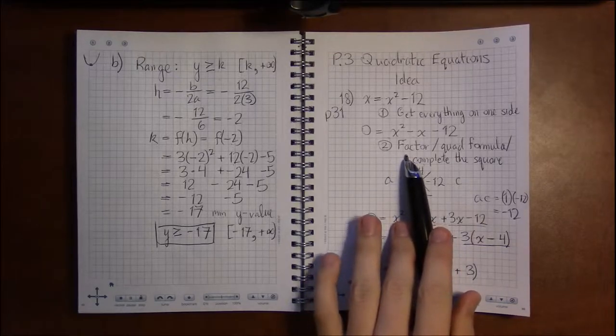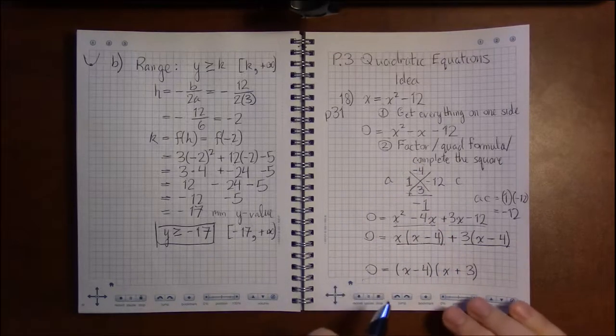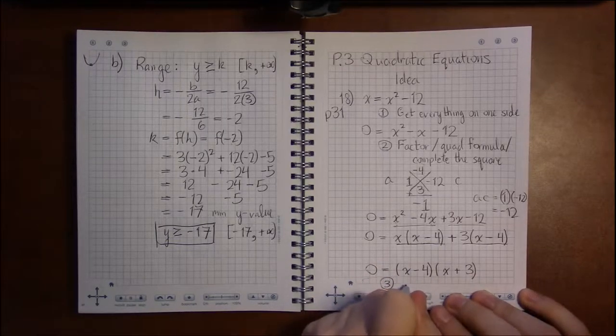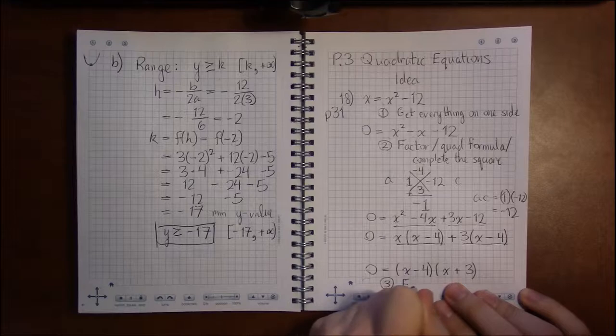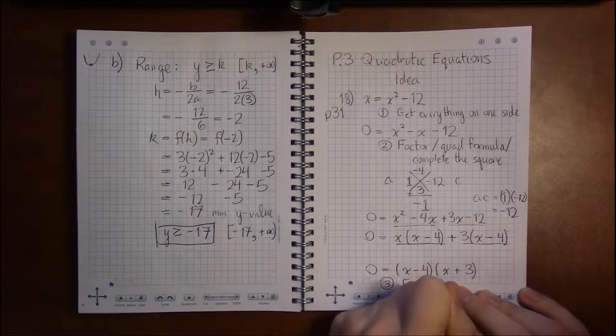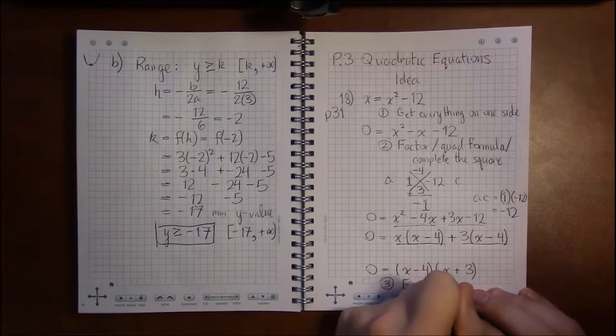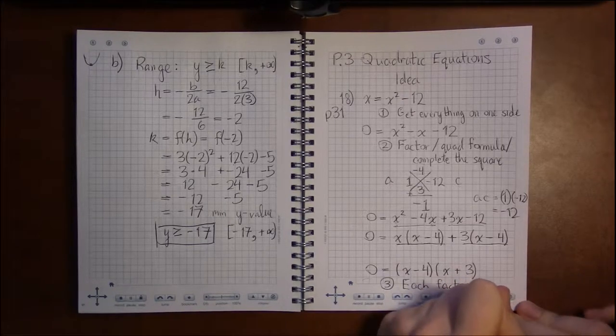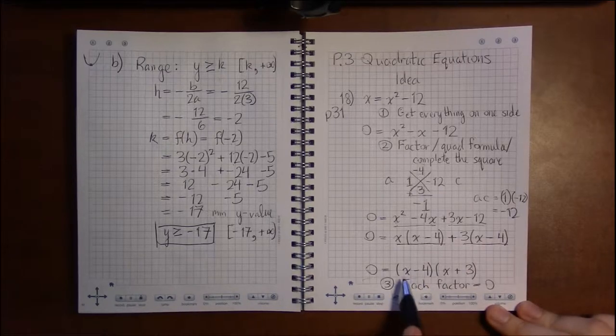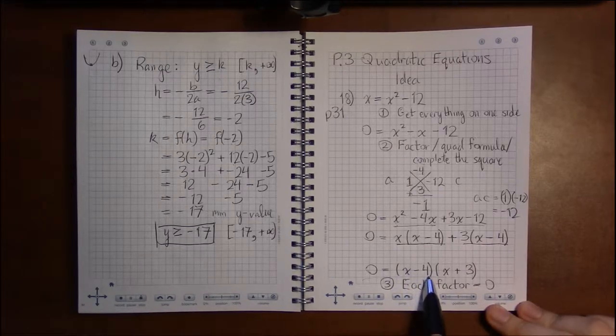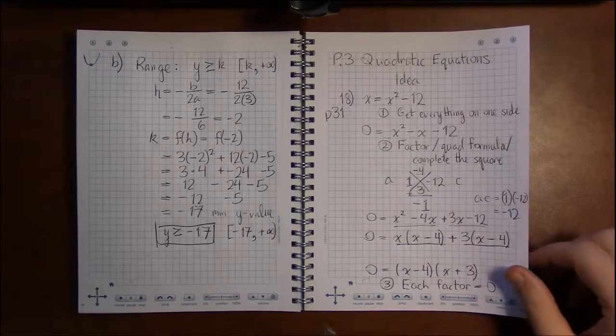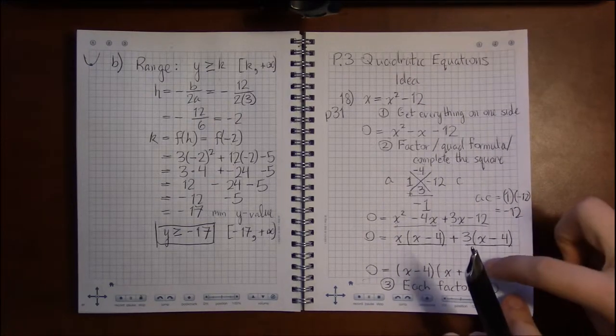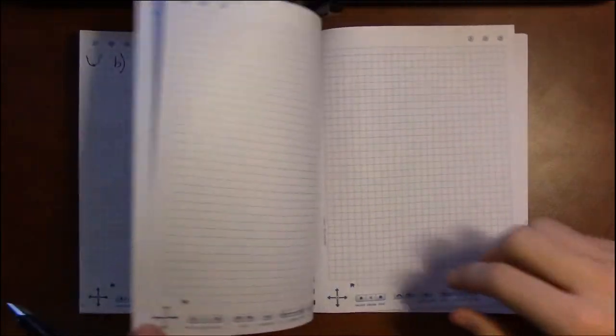And if you're factoring, the next step that you want to do is set each factor—set each thing in parentheses equal to 0—because as I've said before, whenever you're multiplying two numbers together and the result is 0, one of the factors has to be 0. So x minus 4 has to be 0, or x plus 3 has to be 0.